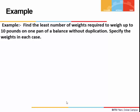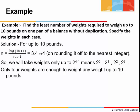Let's do one example. Find the least number of weights required to weigh up to 10 pounds on one pan of a balance without duplication, and specify the weights. We are given m equals 10. Using the formula, n comes out to be log of 11 divided by log 2, which is approximately 3.4, rounded to the nearest integer giving n equals 4. So we start from 2 to the power 0 and go up to 2 to the power 3. These 4 weights suffice to weigh any weight up to 10 pounds.